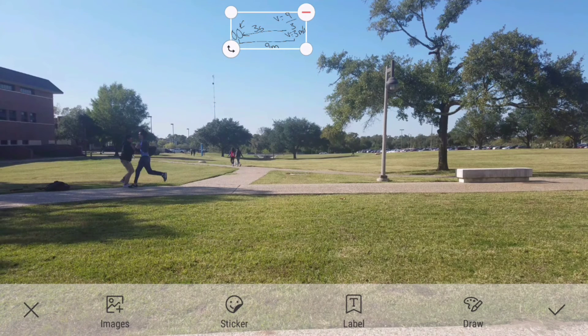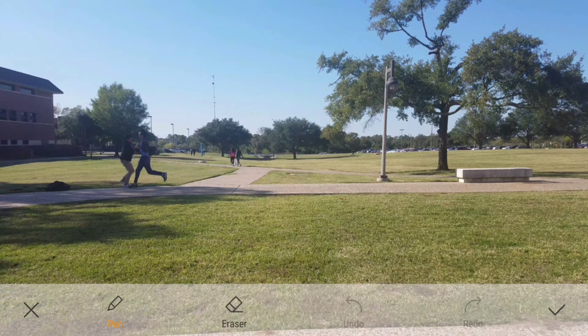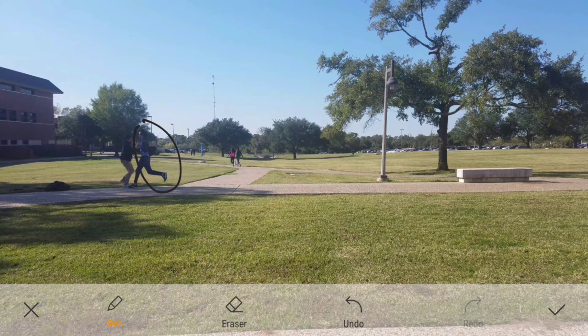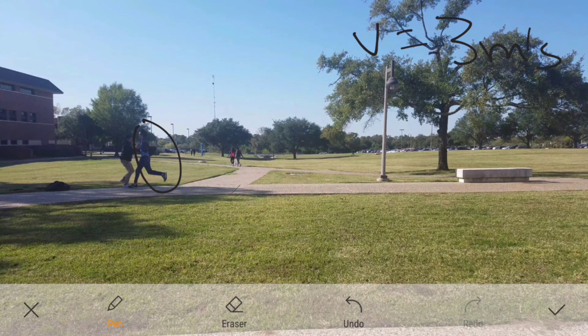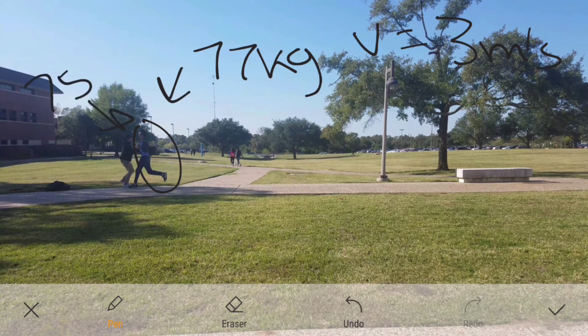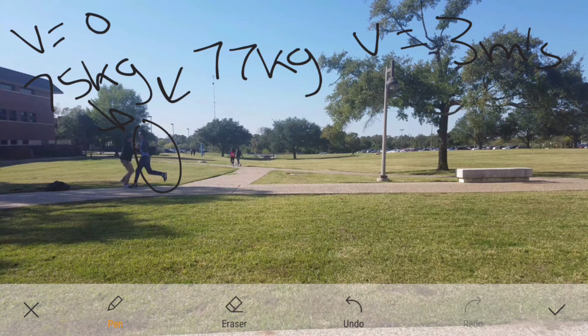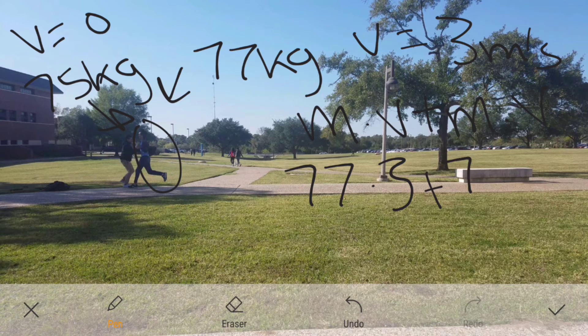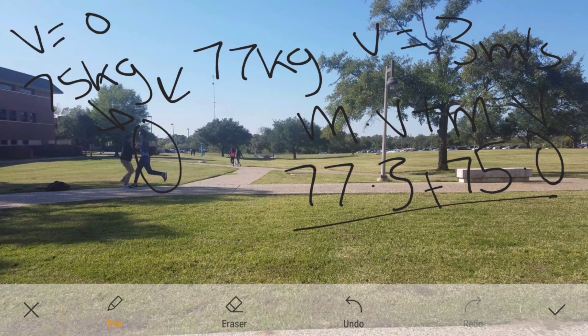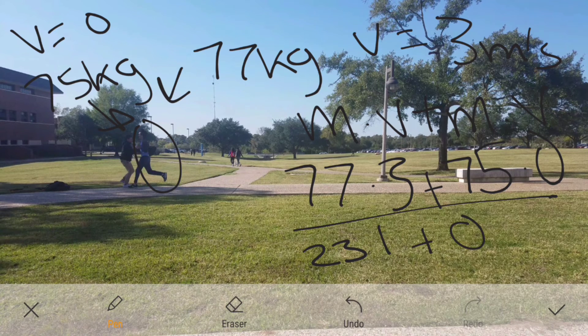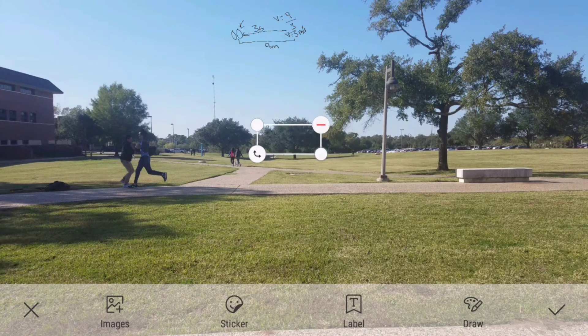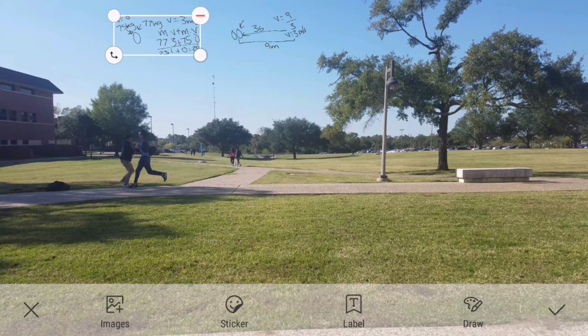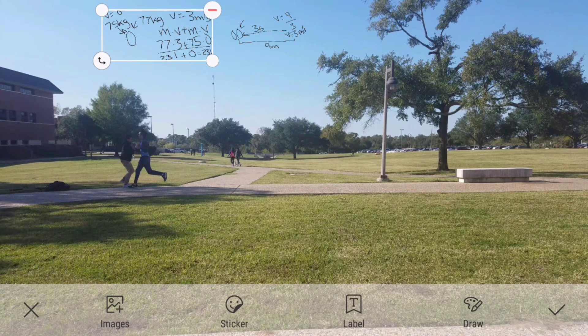Now in order to finish the equation, we just take that, now we know V equals 3 meters per second. We know that Francisco weighs 77 kilograms, Jeremy weighs 75 kilograms, and Jeremy's velocity is 0 because he's just waiting to get hit. We plug in the same equation we used with cars, M times V plus M times V. Mass is 77 times 3, that's for Francisco, plus 75 times 0, that's for Jeremy. I'm getting 231 plus 0, which equals 231.